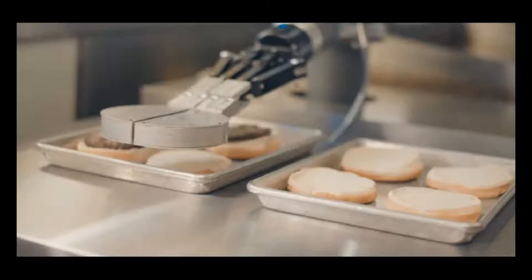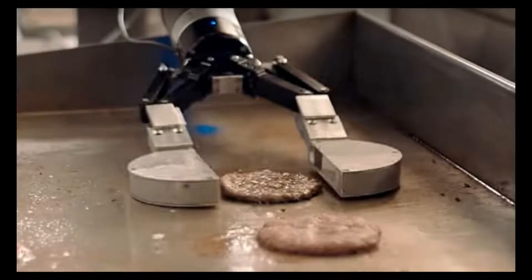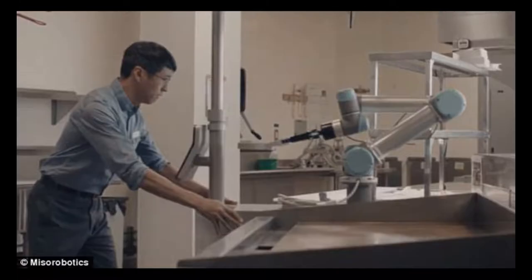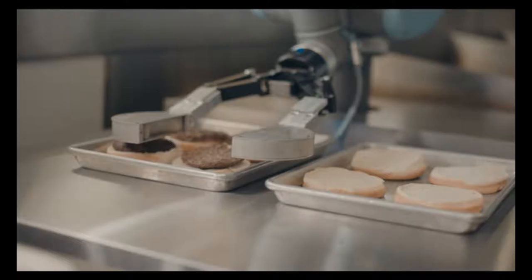It's equipped with thermal cameras, able to tell the temperature of the burger and flip them over, cook them to the appropriate exact temperature, and then move them to another tray where a co-worker dresses the burgers, puts cheese on them, places them in the bun, and serves them to customers.